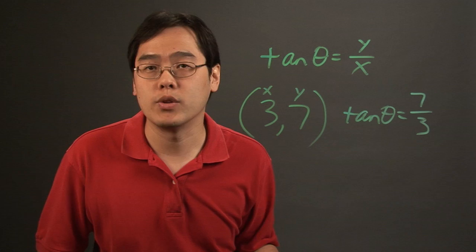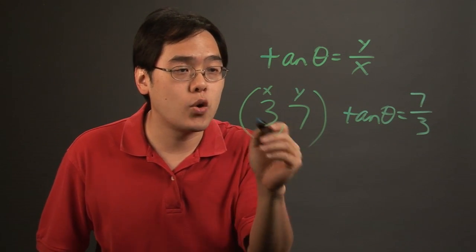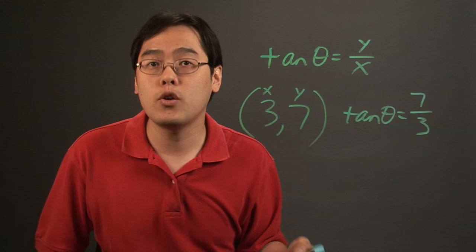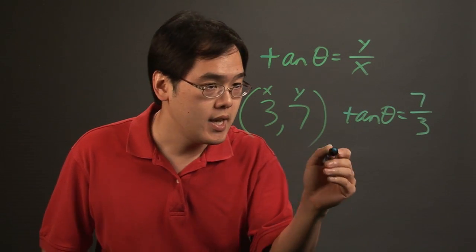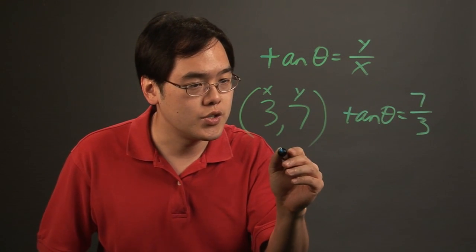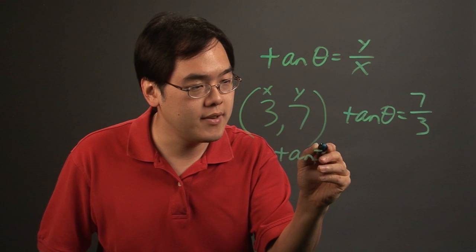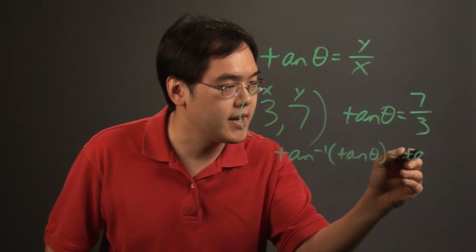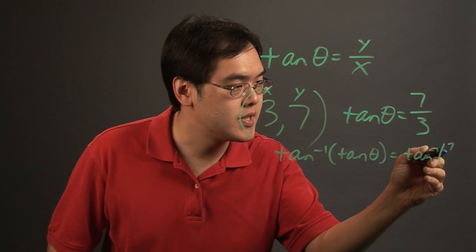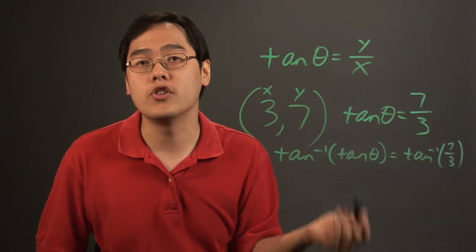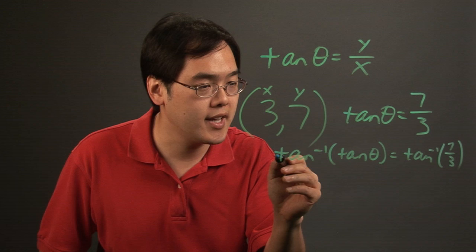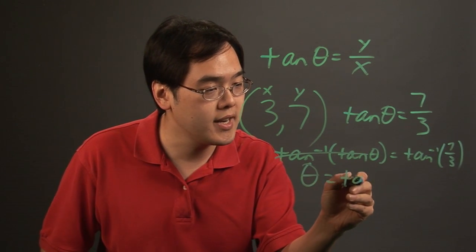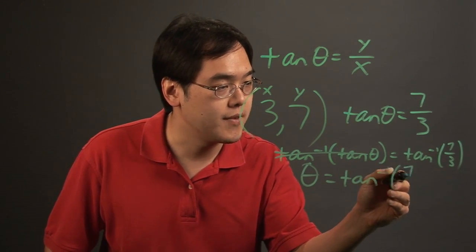And then what you want to think about is to find out the actual angle. Keep in mind that it's in quadrant 1, so what you want to do is take the arctan or the tan inverse of both sides. And this is an uncommon value, so you have tan inverse of tan theta equals tan inverse of 7 thirds. So you're taking the inverse tangent of both sides, and then the tangent inverse and the tan cancel each other out. So you have theta is equal to tan inverse of 7 over 3.